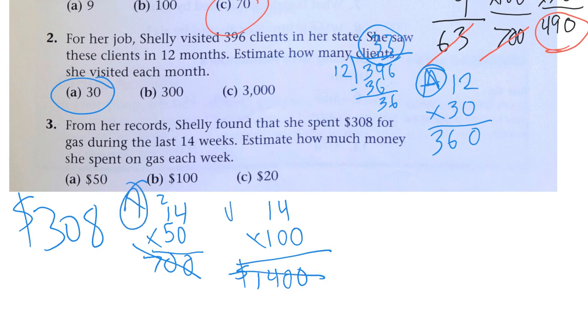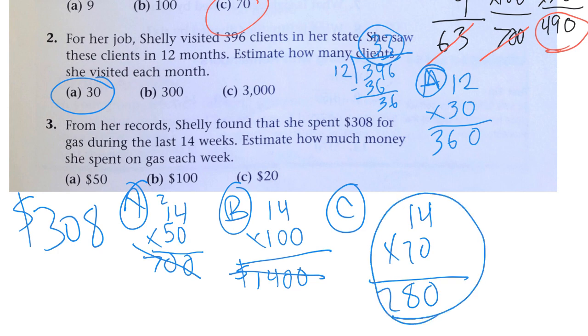A, B, and C. So, 14 times 20. Bring the zero down. 2 times 4 is 8, and 2. 280 is pretty close to 308. So, about $20 a week.